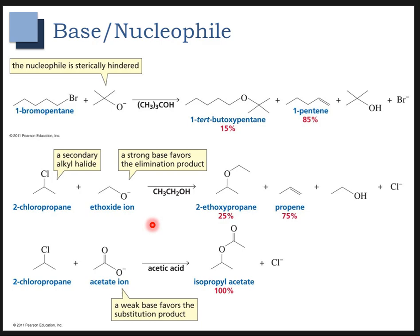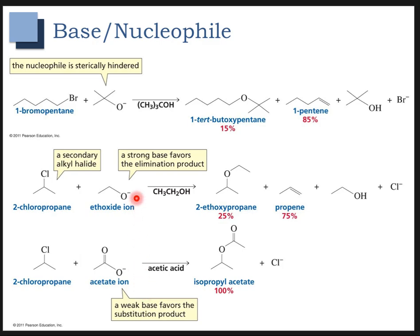Here are a couple of other examples. In this case, we're seeing more elimination because we have a strong base and a secondary substrate. When we have a weaker base, we start to see more substitution, as long as it's still a good nucleophile. Acetate is a weaker base because it is resonance stabilized. Ethoxide has a localized charge, so ethoxide is a stronger base, and we are seeing some substitution but also more elimination.